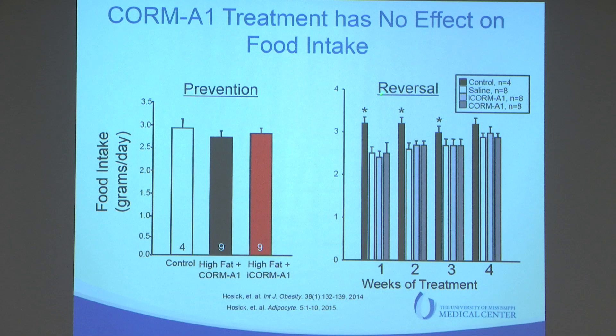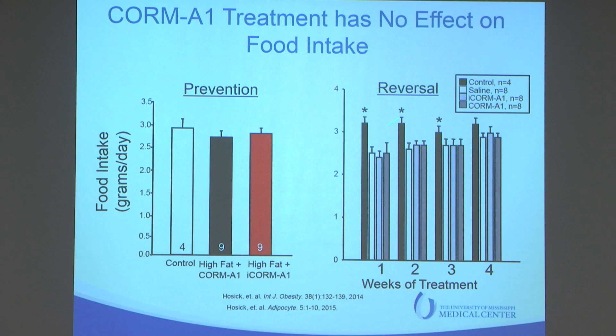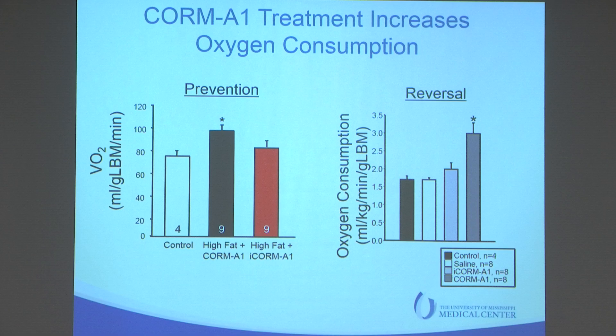First, we looked at the effect of CORM treatment on food intake in both the prevention and reversal studies. The good news for people who might be taking these drugs is that it really has no effect. In the reversal study, we looked at the first four weeks of treatment. The groups that got IP injections, whether saline or CORM, tended to eat a little less than untouched mice — maybe due to stress from handling in the first couple of weeks. But there's really no difference in food intake in CORM-treated animals compared to mice getting control or inactive compound injections. So they're losing a tremendous amount of weight without decreasing food intake at all.